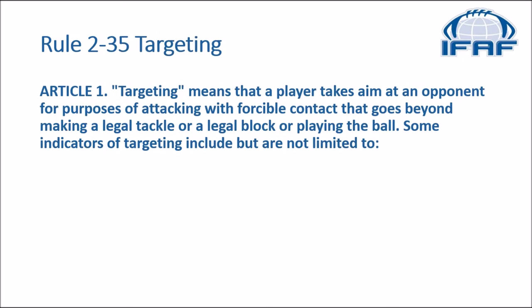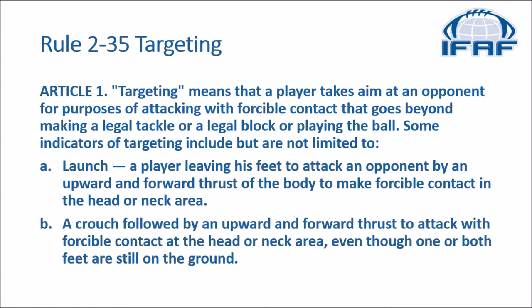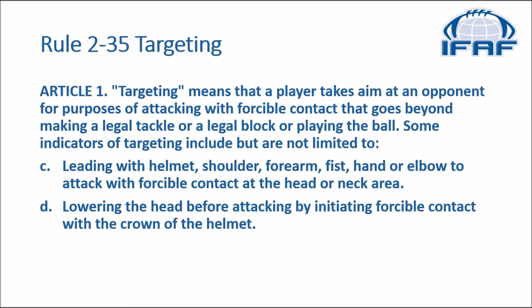Rule 235 goes on to define targeting. Targeting means that a player takes aim at an opponent for purposes of attacking with forcible contact that goes beyond making a legal tackle or legal block, or playing the ball. Some indicators of targeting include but are not limited to: A) a launch — a player leaving his feet to attack an opponent by an upward and forward thrust of the body to make forcible contact in the head or neck area; B) a crouch followed by an upward and forward thrust to attack with forcible contact at the head or neck area, even though one or both feet are still on the ground; C) leading with helmet, shoulder, forearm, fist, hand, or elbow to attack with forcible contact at the head or neck area.